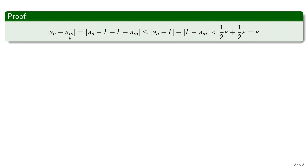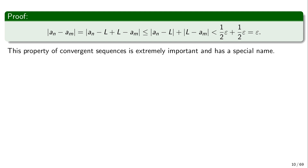We have proved that we can make the distance between elements of the sequence that are far enough as small as we please. This property can be generalized to every convergent sequence in a metric space, because the only thing we need is a way of measuring distances. Since a convergent sequence's distance from its limit can be made as small as we please, and any metric satisfies the triangle inequality, the distance between elements of the sequence must also be as small as we please.